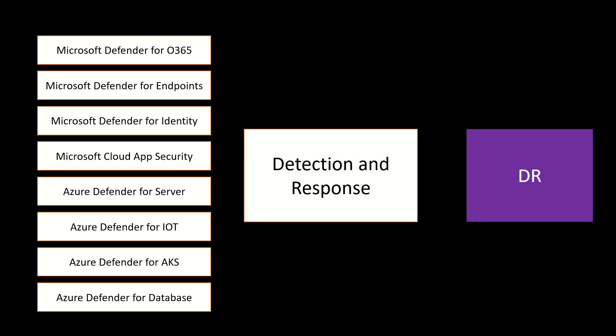Taking a step back from a detection and response capability perspective: if there is any solution that can highlight a threat and that intelligence can be shared, that means you are protecting your digital states end to end. If you are protecting everything with different security solutions which are sharing intelligence — that's exactly what extended detection and response capability means. This X can be anything, it can be any security solution. You have to have the capability to detect and respond to threats across multiple solutions and different digital states.